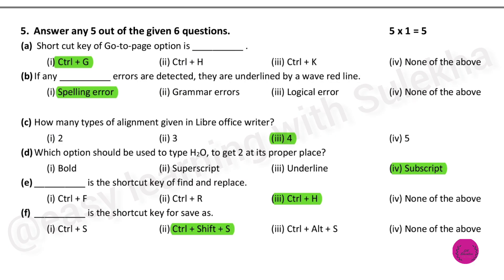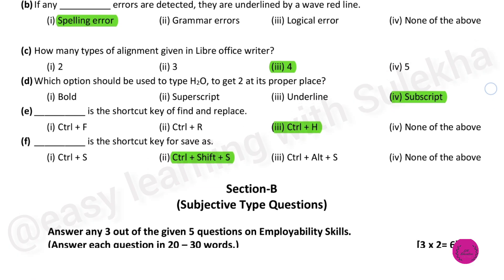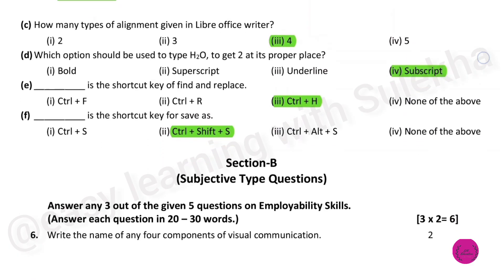Number five question: shortcut key of Go To Page option is Ctrl+G. If any blank errors are detected, they are underlined by a wavy red line. The answer is spelling error. How many types of alignment are given in LibreOffice Writer? That is 4.